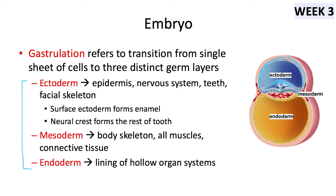The neural crest will form the rest of the tooth structures — more on tooth development in the pediatric series. The primitive streak is on the caudal dorsal surface, acting as an important landmark determining right from left and mediating development. Mesoderm contributes to the body skeleton — everything but the facial skeleton — all muscles and connective tissue. Endoderm lines the hollow organ systems like the gastrointestinal tract.